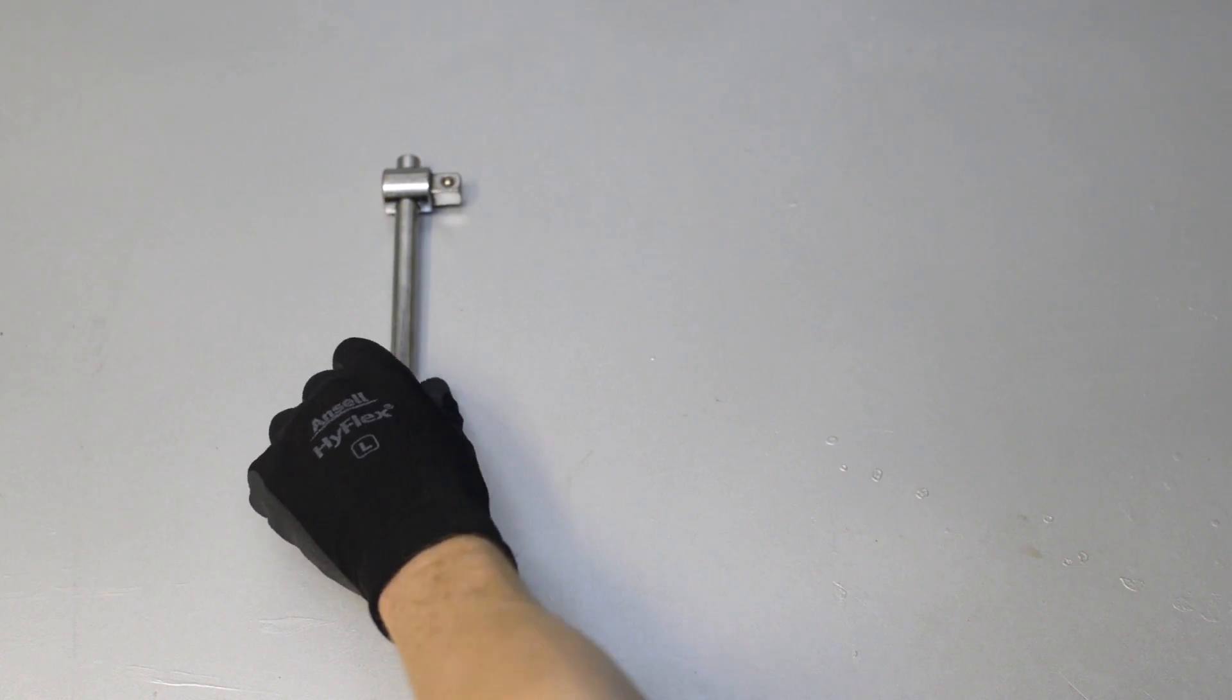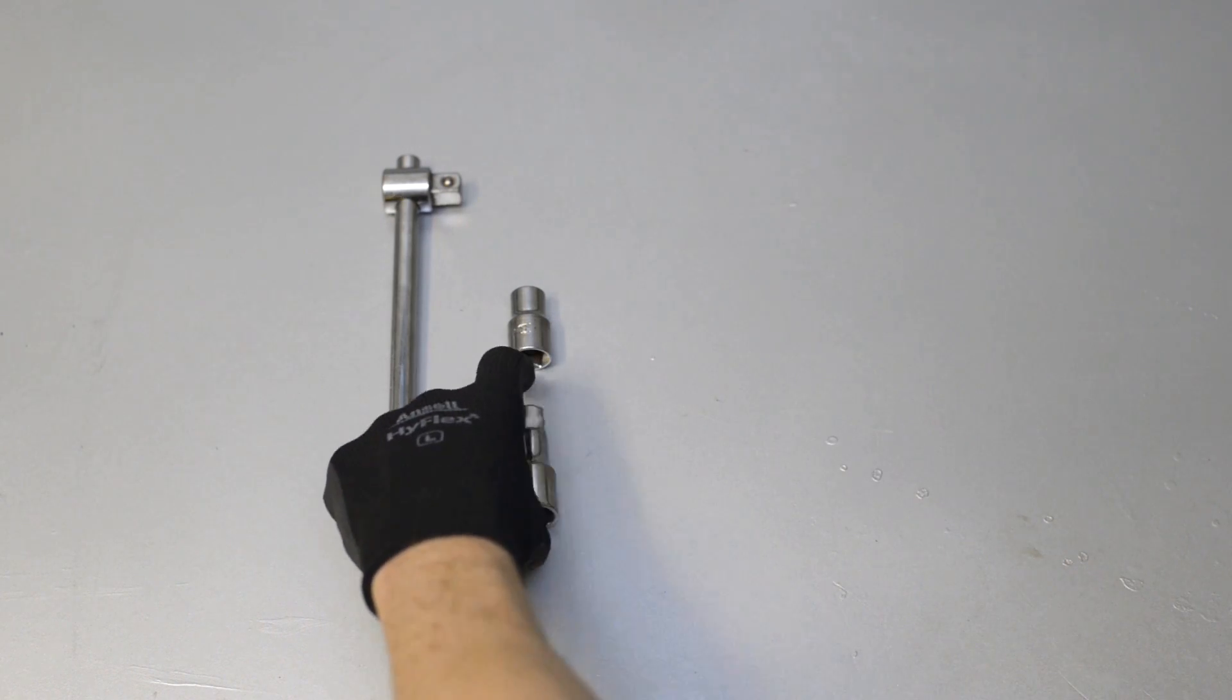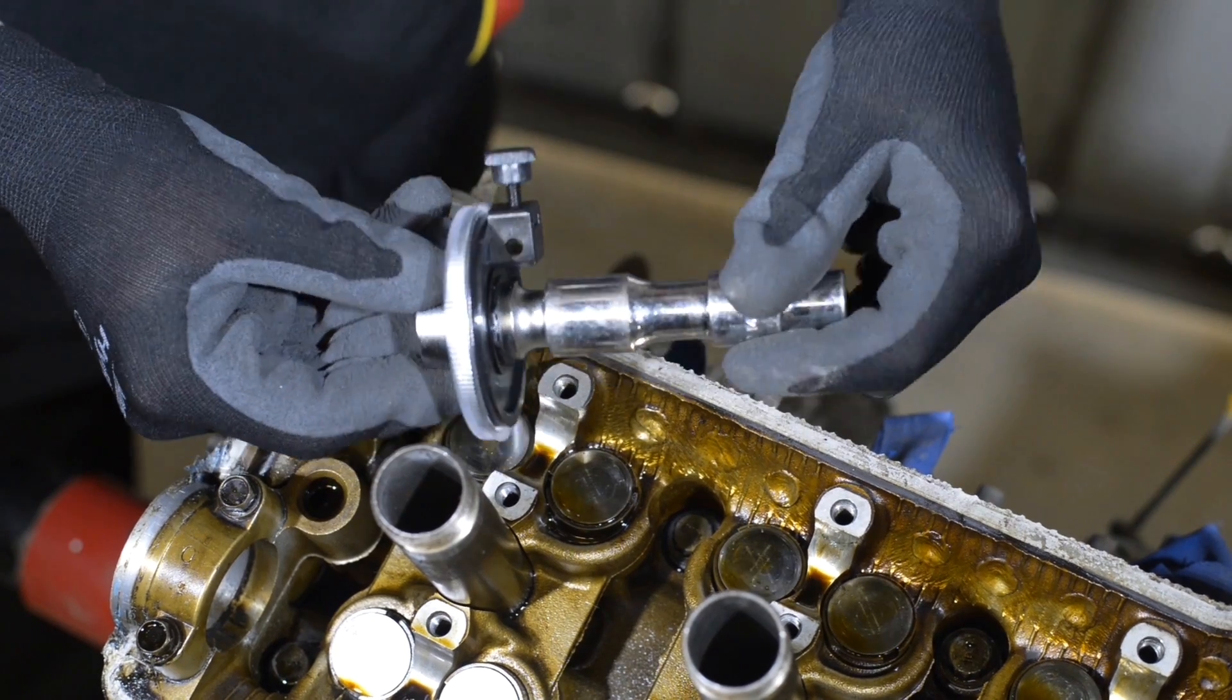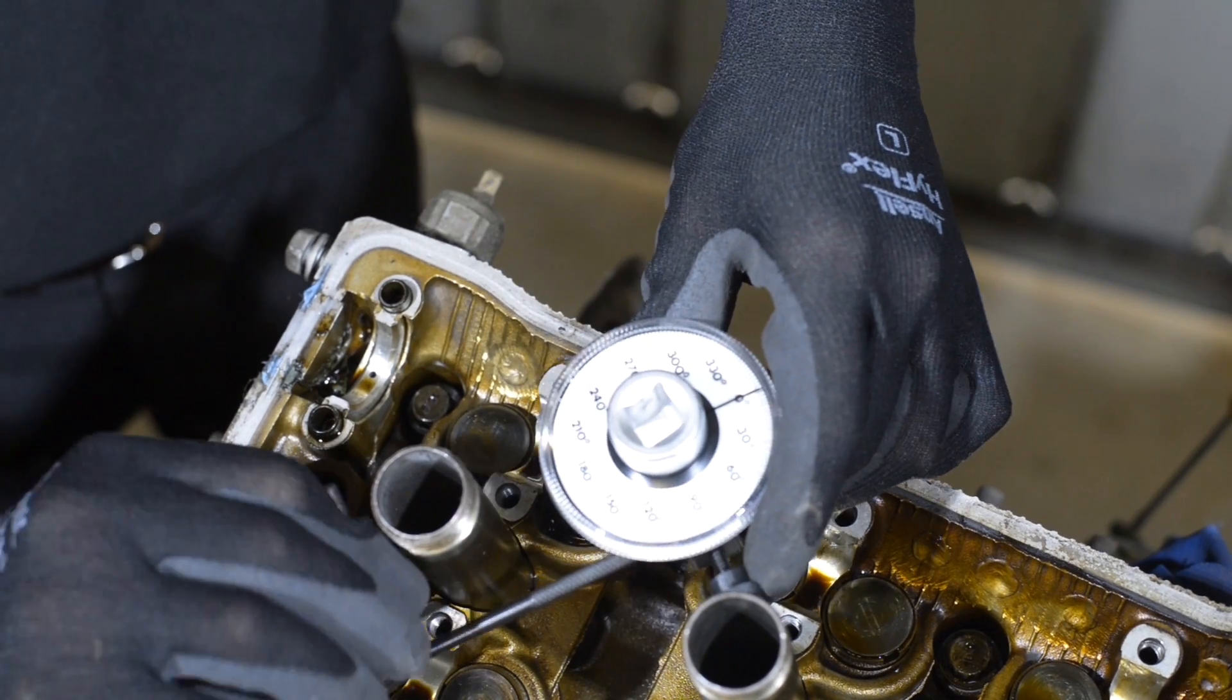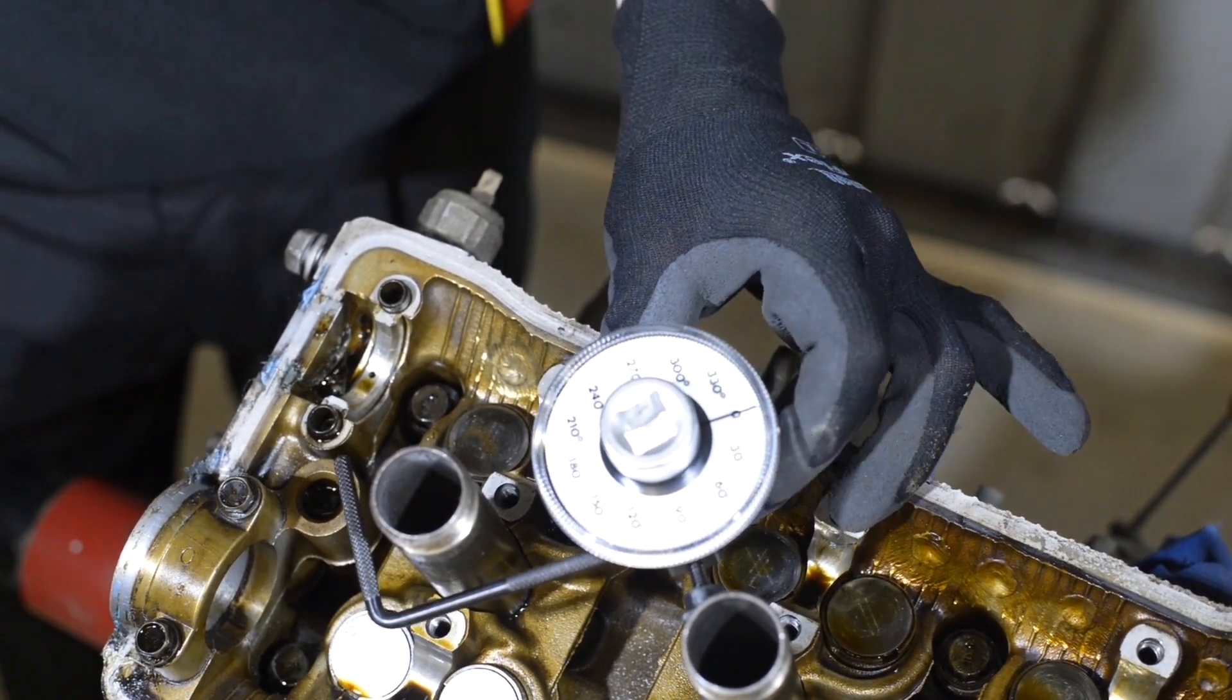To use this gauge, you'll require a breaker bar, a socket to suit the fastener, a small extension if needed, and the angular torque gauge. With the socket attached to the torque gauge, position the socket on the fastener. Brace the adjustable arm against an existing nut or fixture or in a bolt hole to prevent the gauge from moving.